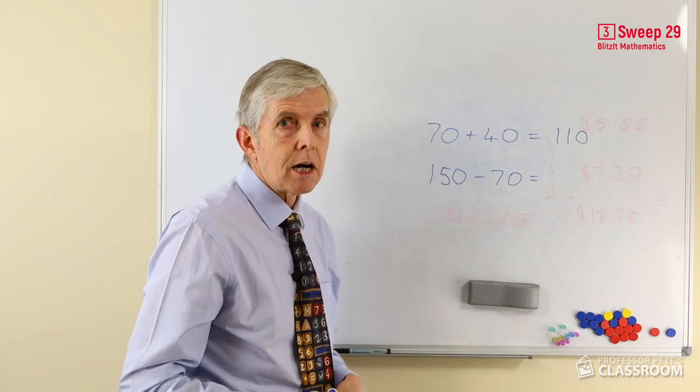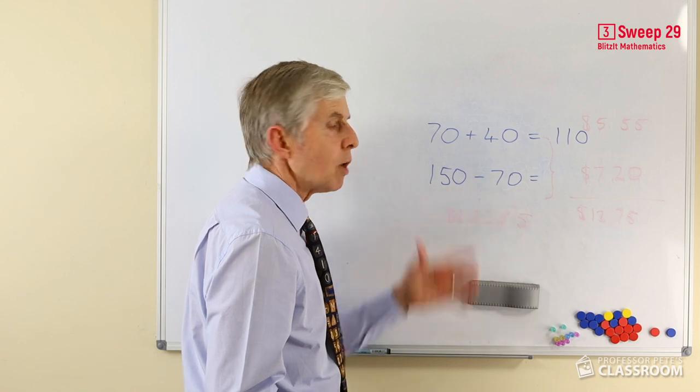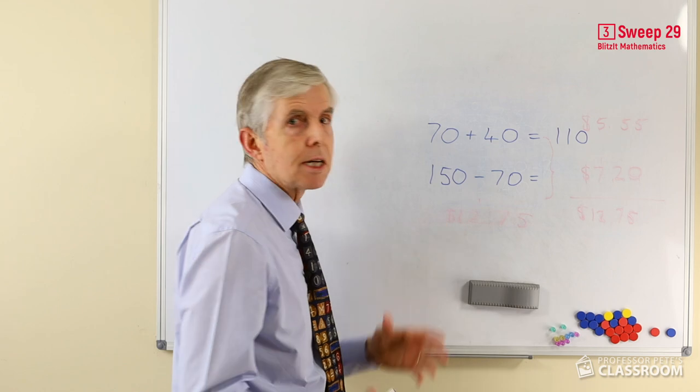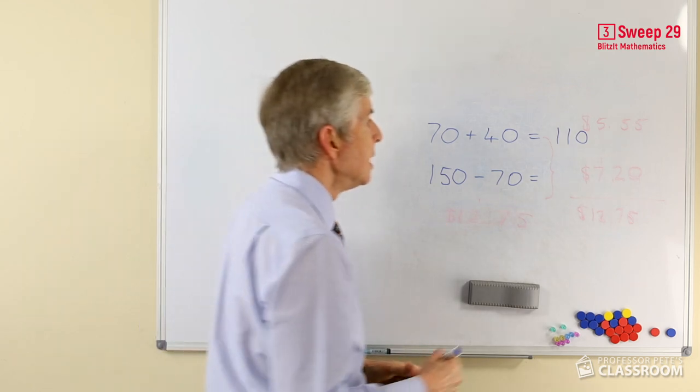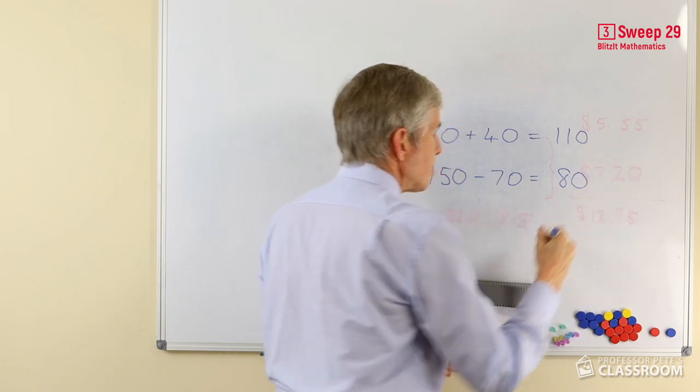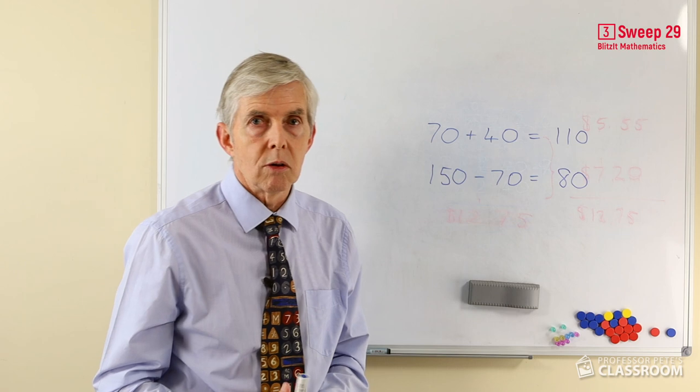Same sort of idea: 150 take away 70. We can ignore the ones if we just think of tens. What is 15 tens take away 7 tens? 15 take away 7 is a known number fact—it's one of the harder ones. Of course the answer is 8, and so the answer to our question is 8 tens, or 80.